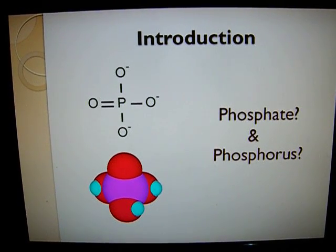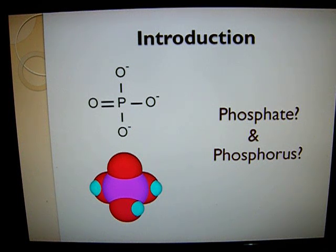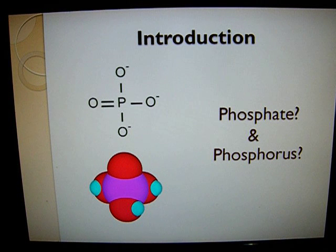Let's start with the introduction. What is phosphate and phosphorus? Phosphorus, which is usually in the form of phosphate, is a normal part of the environment. It occurs in the form of phosphate-containing rocks and as the excretory and decay products of plants and animals. Human contributions to the phosphorus cycle result primarily from the use of phosphorus-containing detergents and fertilizers.